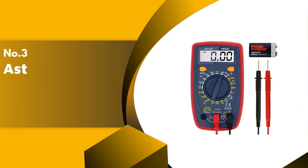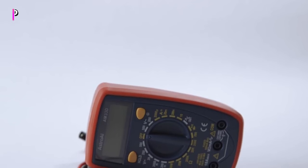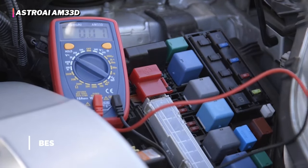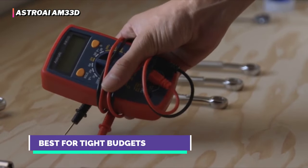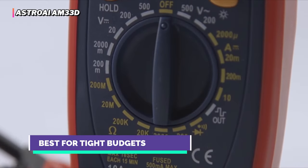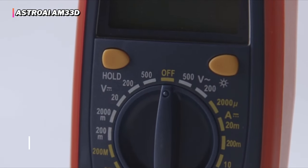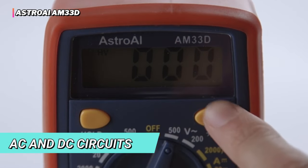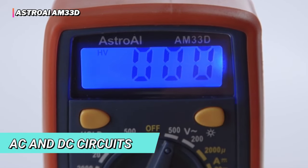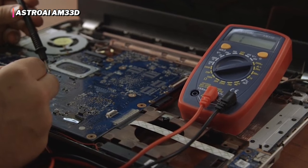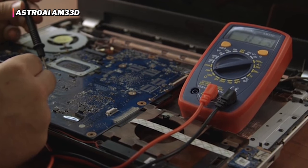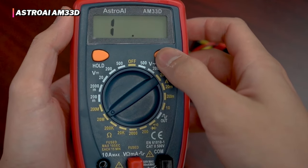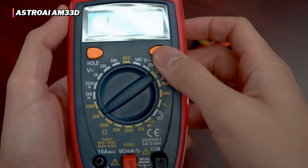The third product on our list is the Astro AI AM33D. If you only have the occasional electrical project and are shopping for a low-cost option to toss in your toolbox, check out the Astro AI AM33D. This simple multimeter can help with troubleshooting AC and DC circuits, and has the crucial audible continuity check to help you track down a broken wire or loose connection.